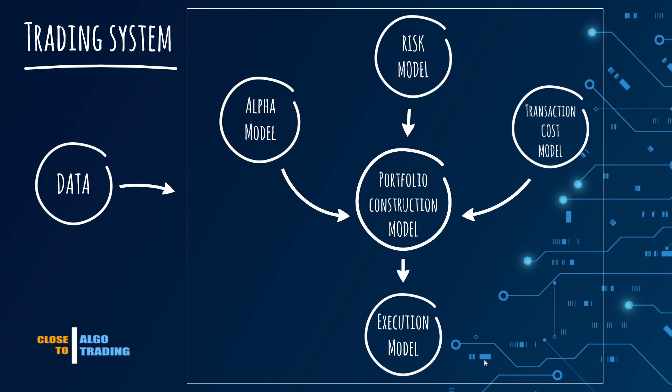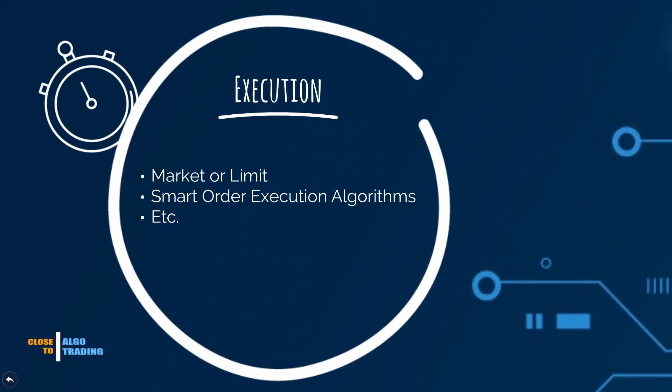And the last, but not the least, element of the trading system is the execution model. The execution model receives information from the construction model and tries to execute the order at the best price. There are many different types of execution models. Some of them very simple, like market or limit orders. Some are complex, for example, those that analyze the market microstructure and use machine learning algorithms.